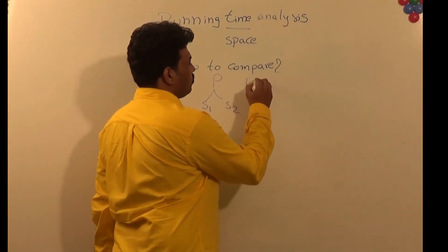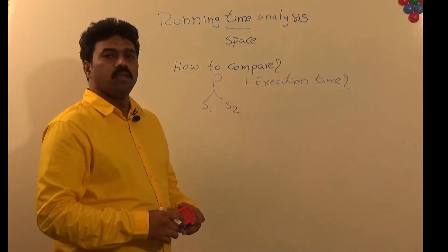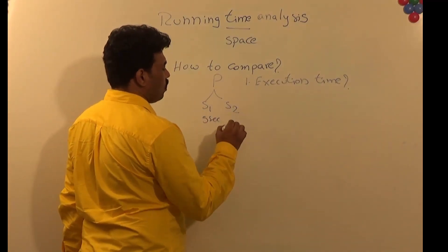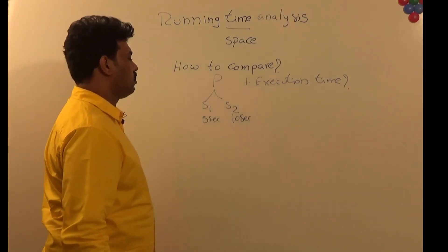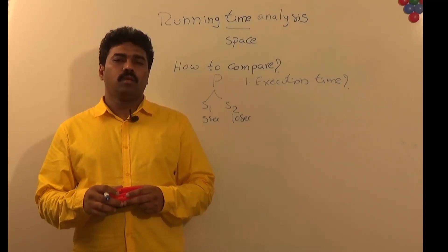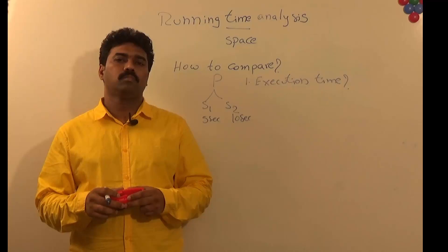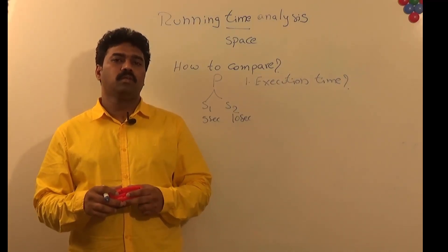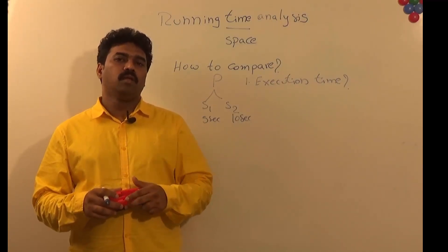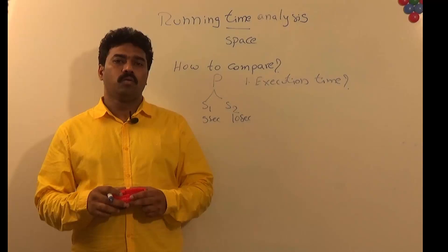One such parameter is execution time. Can we compare solutions S1 and S2 based on execution times? Let us assume S1 is taking 5 seconds and S2 is taking 10 seconds on some configuration. If we change the configuration — say from Intel machines to power machines or mainframes — we will get different execution times. That means execution times are dependent on the configuration of the machines.